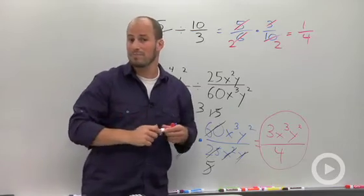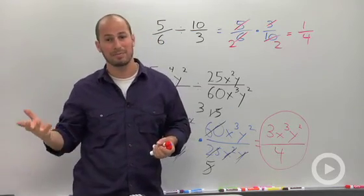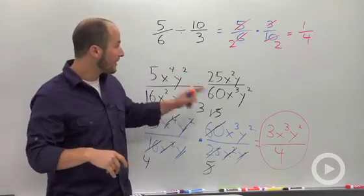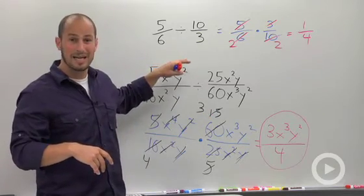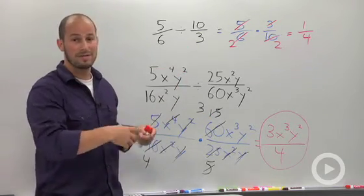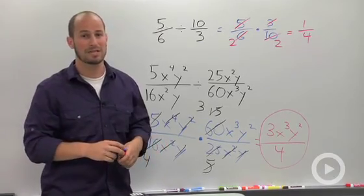So multiplying rational expressions, pretty much the same as multiplying fractions. Dividing rational expressions, pretty much the same as dividing fractions. All you have to do is flip it over, and then it turns right back into a multiplication problem.